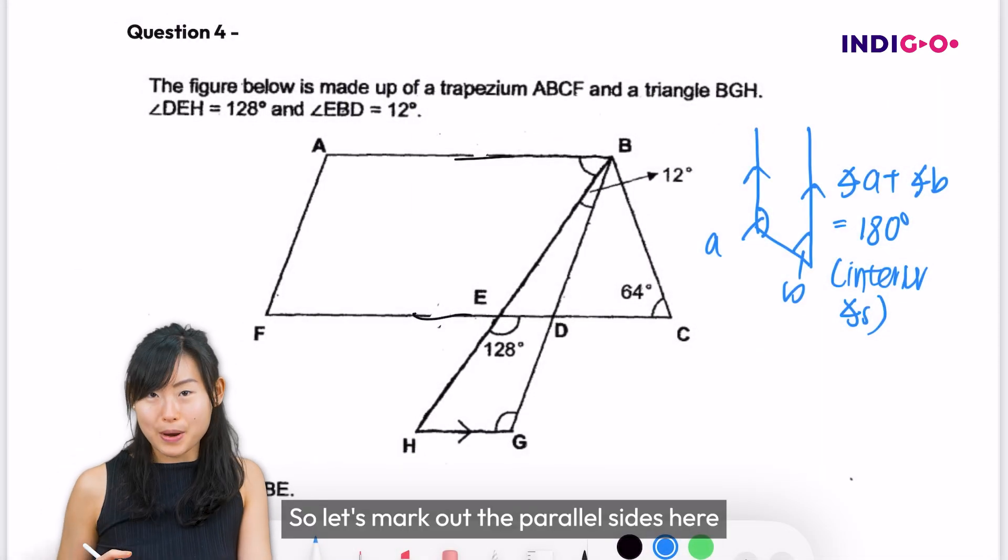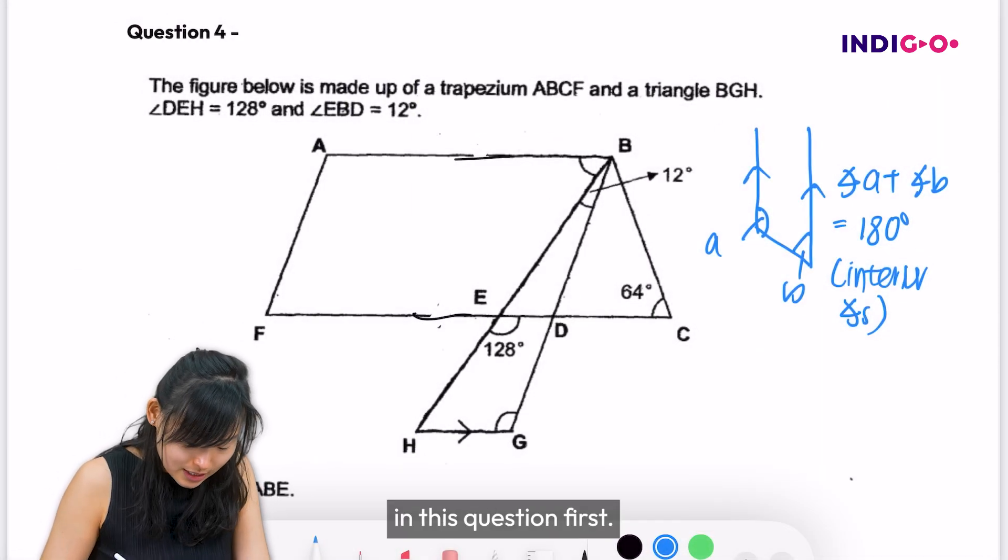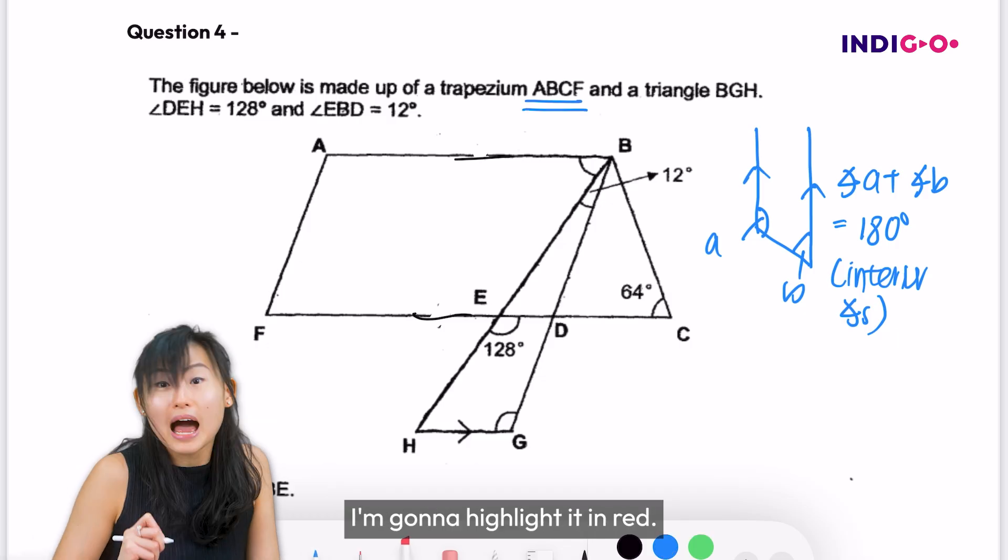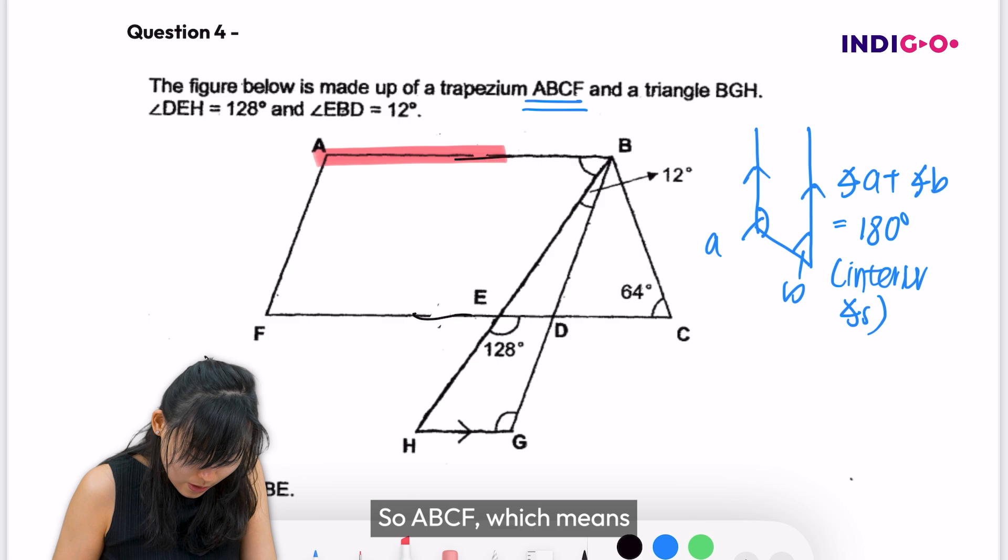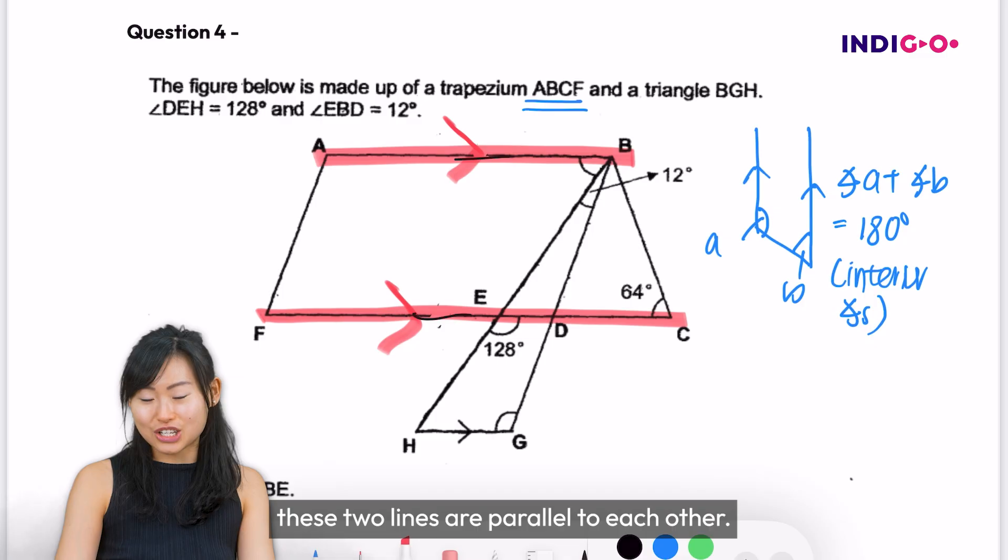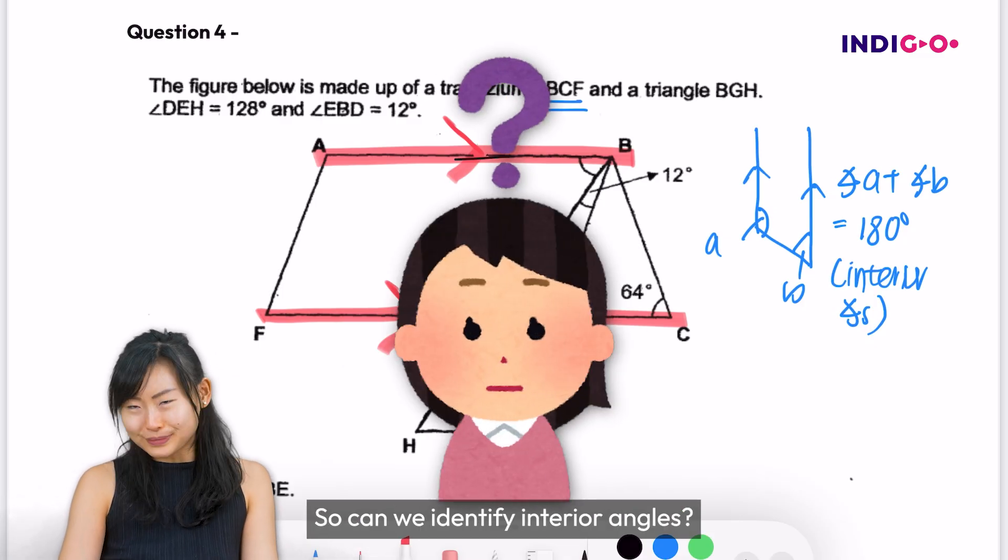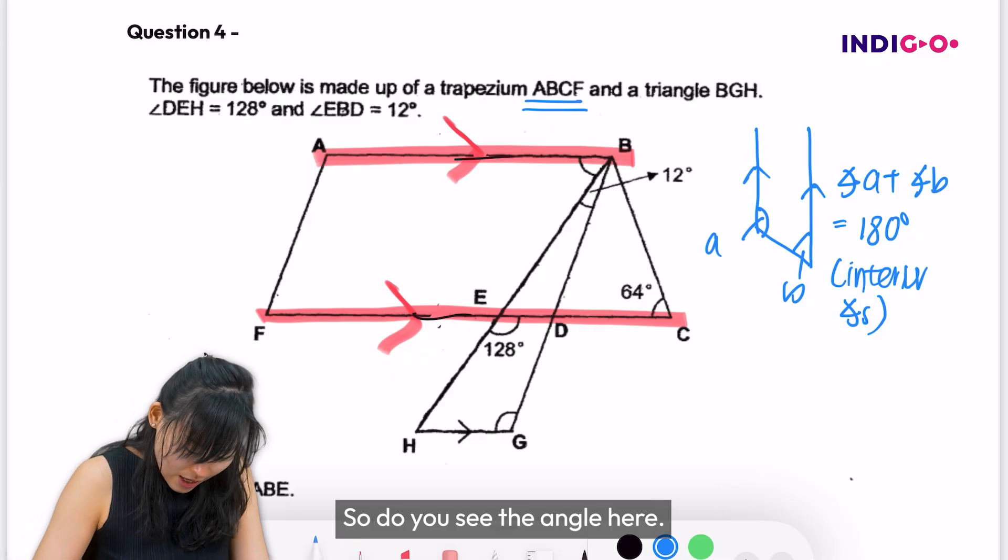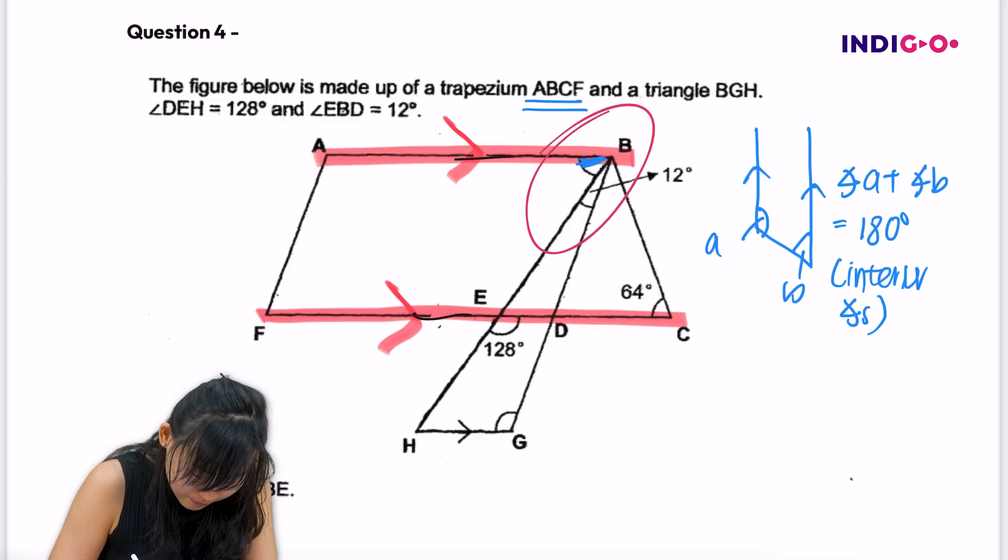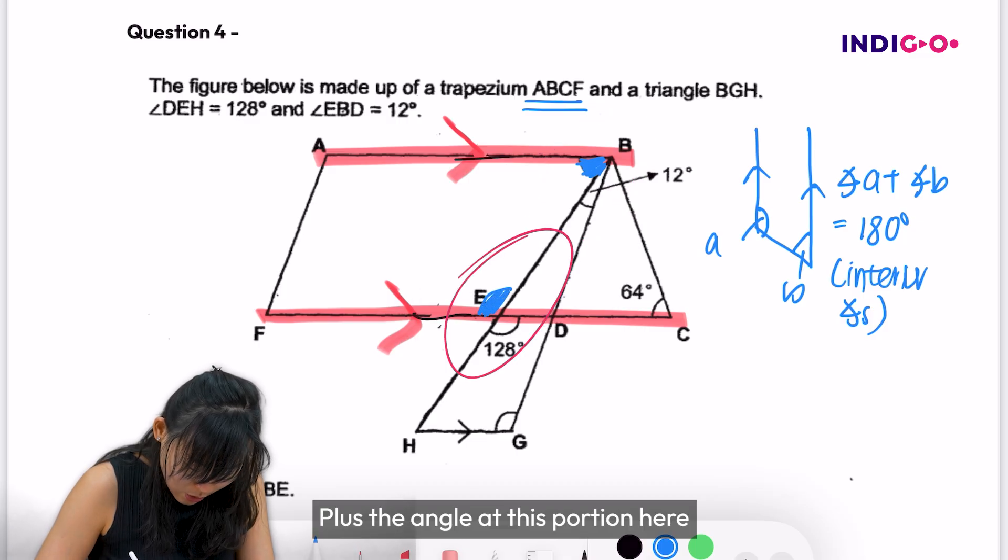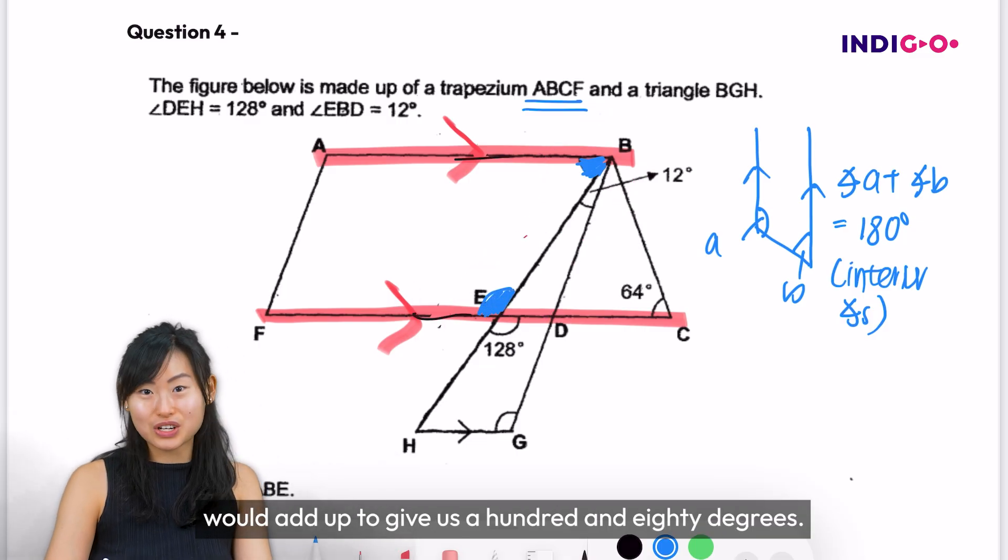So let's mark out the parallel sides here in this question first. They said this is the trapezium ABCF. I'm going to highlight it in red, so ABCF, which means these two lines are parallel to each other. Can we identify interior angles? So do you see the angle here plus the angle at this portion here would add up to give us 180 degrees.